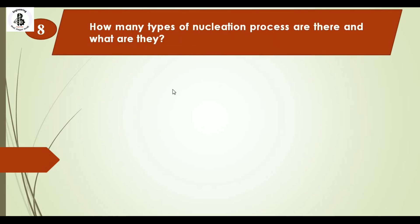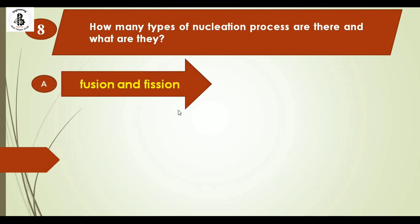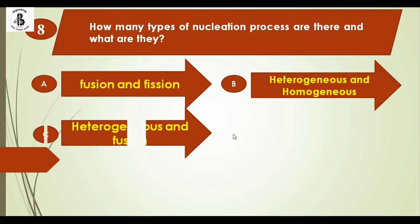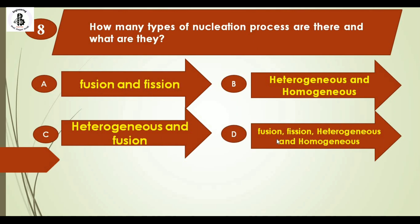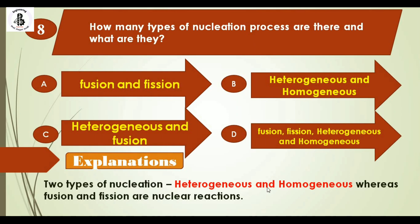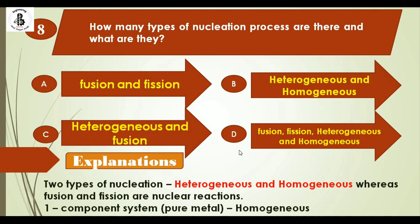Question 8: How many types of nucleation processes are there and what are they? Option A: fusion and fission, Option B: heterogeneous and homogeneous, Option C: heterogeneous and fusion, Option D: fusion, fission, heterogeneous and homogeneous. There are two types of nucleation — heterogeneous and homogeneous. Fission and fusion are nuclear reactions. For pure metals it is homogeneous, and for binary systems it is heterogeneous nucleation. In one-component systems: homogeneous; two-component systems: heterogeneous. The right answer is option B.